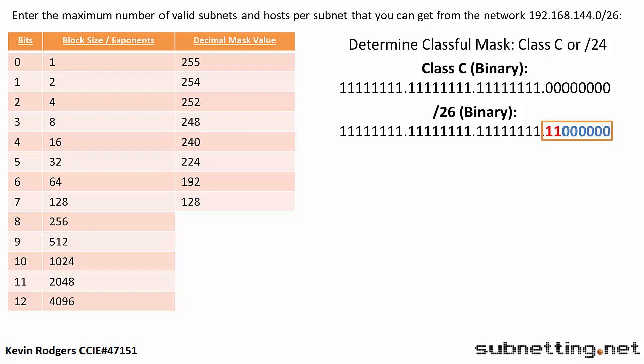The new network bits, or ones, represent the valid subnets, and the host bits, or zeros, represent the hosts per subnet. In this case, we have two subnet bits and six host bits.